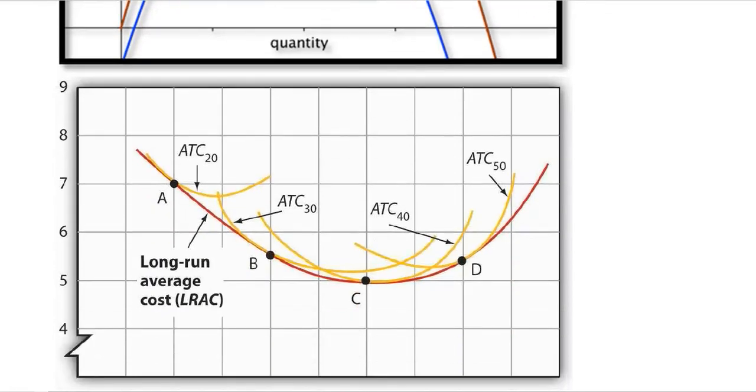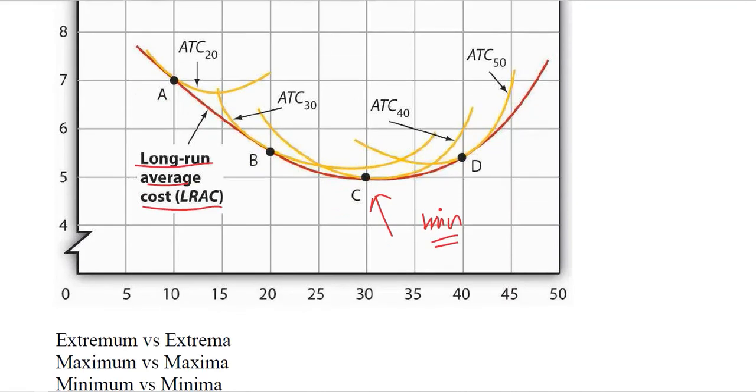So an example for minimum is when we have a long-run average cost curve, and you know it is an envelope of various average cost curves for different levels of output, that is different plants. So this is that point at which we have the lowest level of long-run average cost curve, and this can be termed as a minimum in an economic situation.